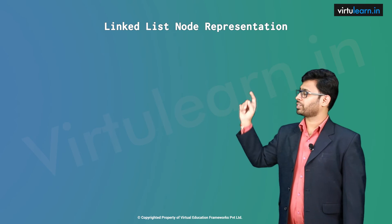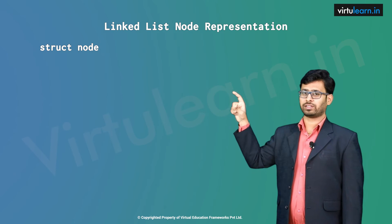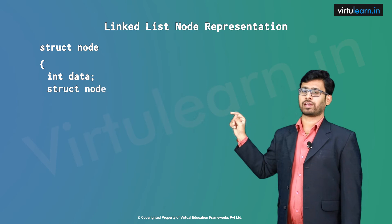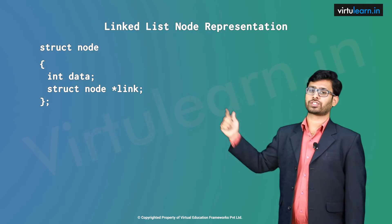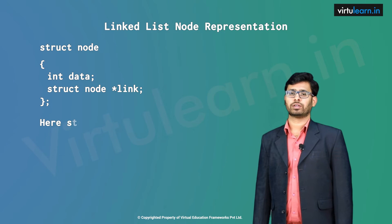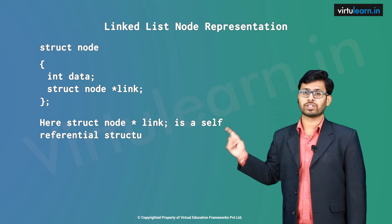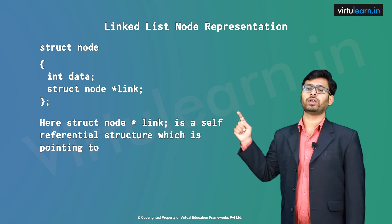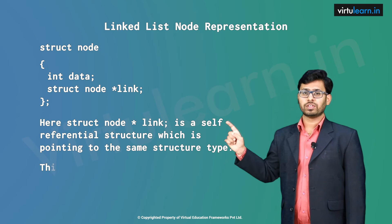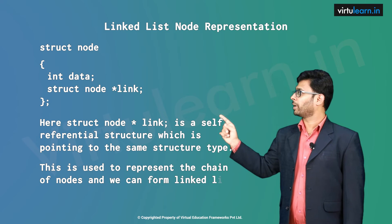Linked list node representation: struct node, under which we have int data and struct node *link, which gives the link to the next node, followed by closing curly brace and semicolon. Here, struct node *link is a self-referential structure pointing to the same structure type, used to represent a chain of nodes and form a linked list.